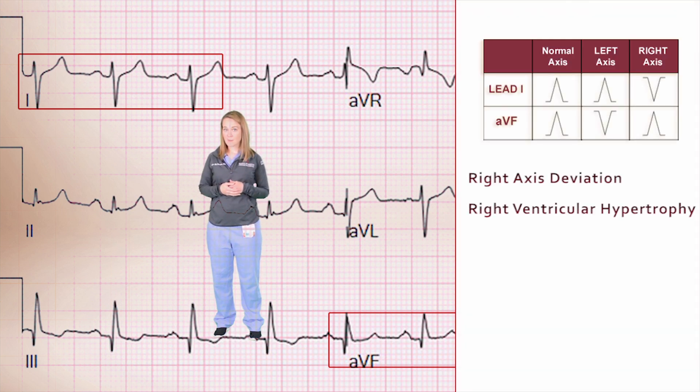We see this most commonly in someone with right ventricular hypertrophy, where the right ventricles become bigger because it's pushing against elevated pulmonary artery pressure. This is often an EKG that you'll see in our pulmonary hypertension patients.